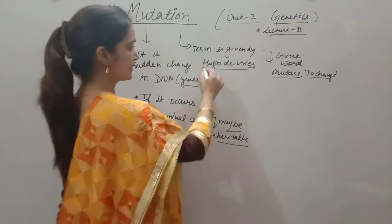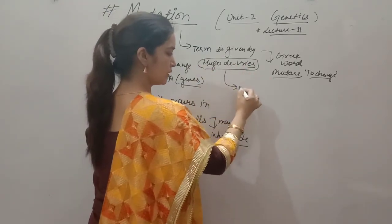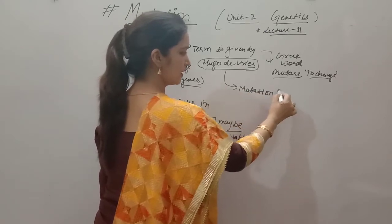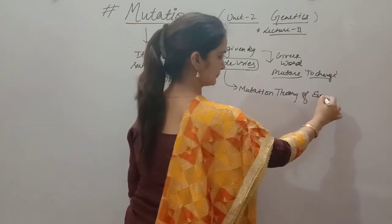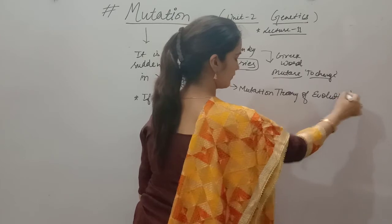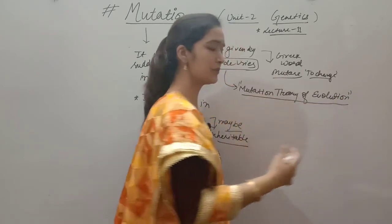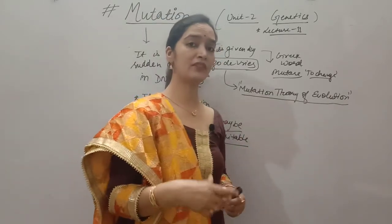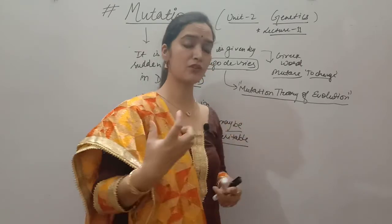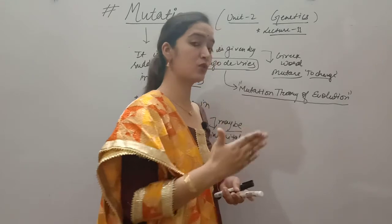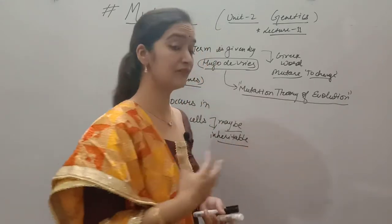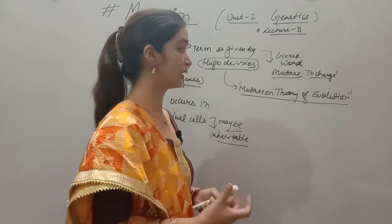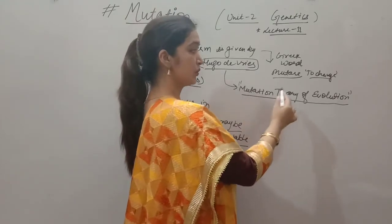The scientist Hugo de Vries also gave a theory known as the Mutation Theory of Evolution. Evolution means formation of new species with the passage of time. Some scientists like Darwin believed that evolution is a slow and gradual process, but Hugo de Vries believed it results due to sudden changes in the genome of the organism — that's why he gave the Mutation Theory of Evolution.